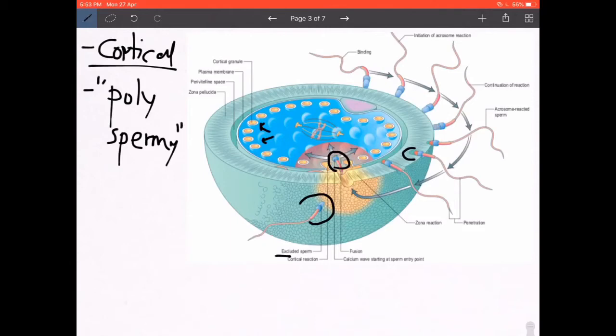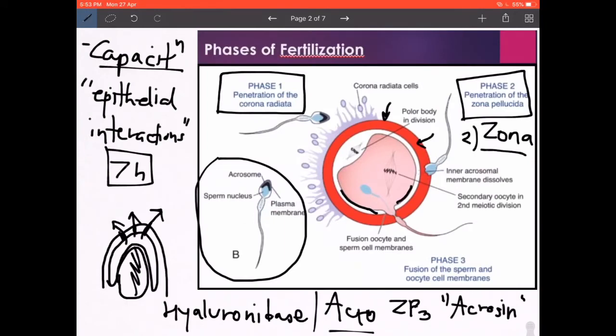The cortical reaction and the zona reaction essentially make the secondary oocyte unavailable for any more sperms. There is also a calcium depolarization that contributes to this phenomenon. Different textbooks have mentioned these different mechanisms, and you could just remember the names of them. We finished phase 1, piercing the corona radiata. We finished phase 2, piercing the zona pellucida and reaching the plasma membrane of the oocyte. Finally, phase 3 is the fusion of the cell membrane of the sperm and the oocyte.